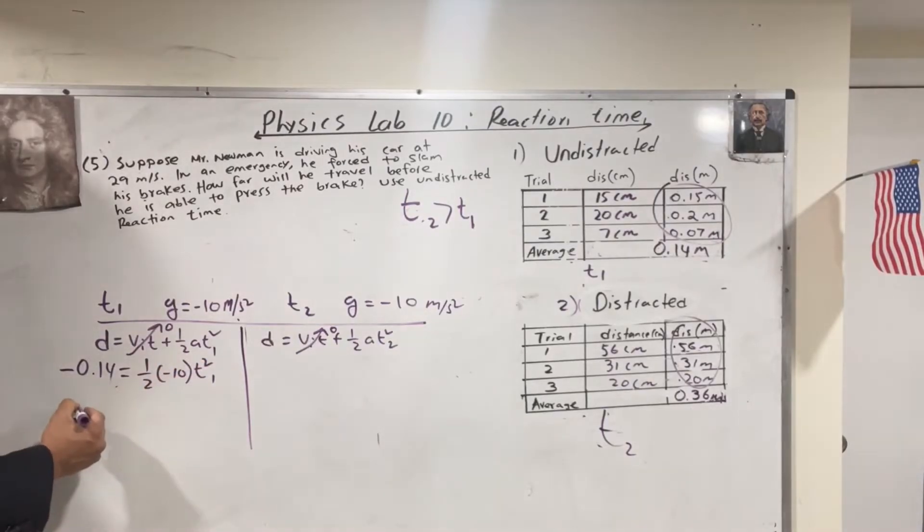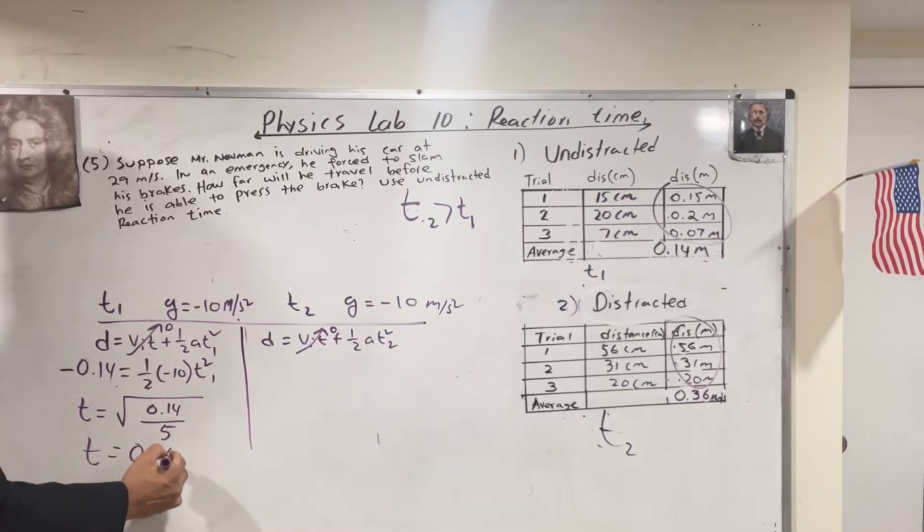So you have T is equal to negative negative cancel. You have the 2 goes to negative 10 negative 5 times negative negative cancel. So 0.14 divided by 5. So T is equal to 0.167 second.